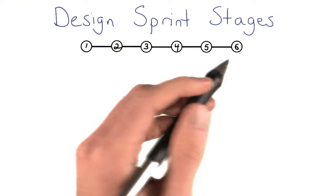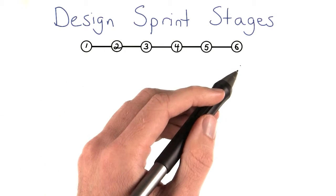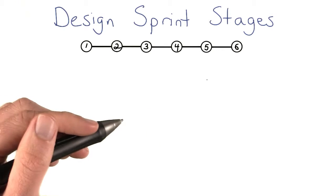There are six stages or modes of a design sprint. And each of these stages solves an important part of the design process.